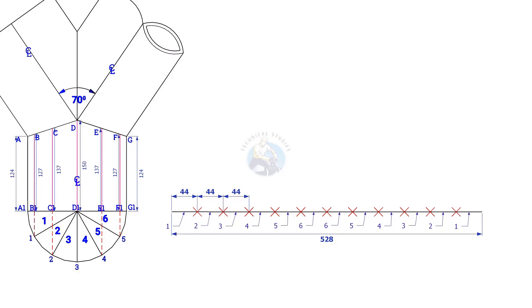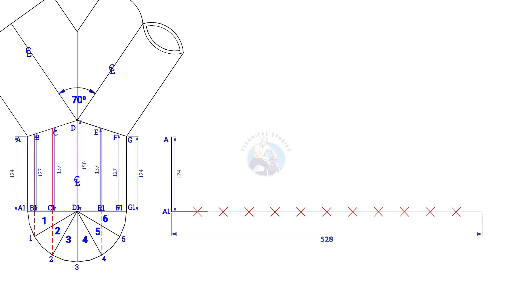Draw a perpendicular line at the start of this line — the length shall be 124mm. Similarly, draw lines B, B1, C, C1, etc.